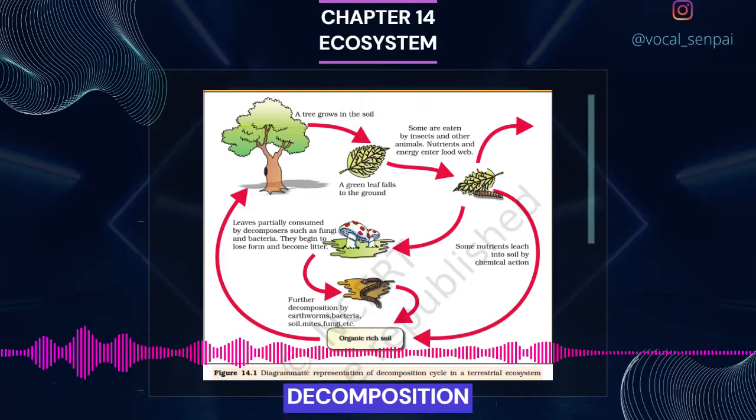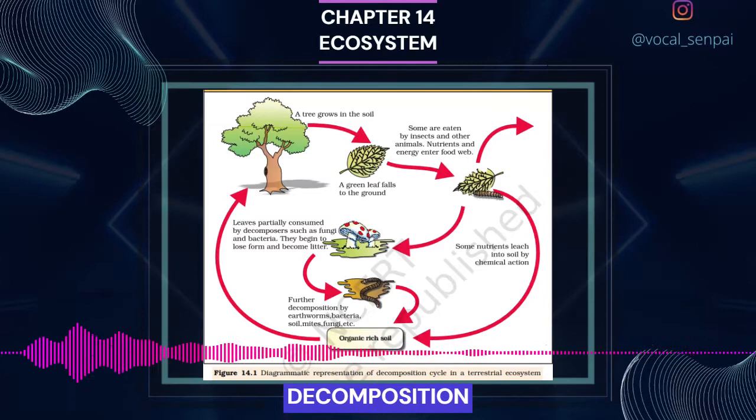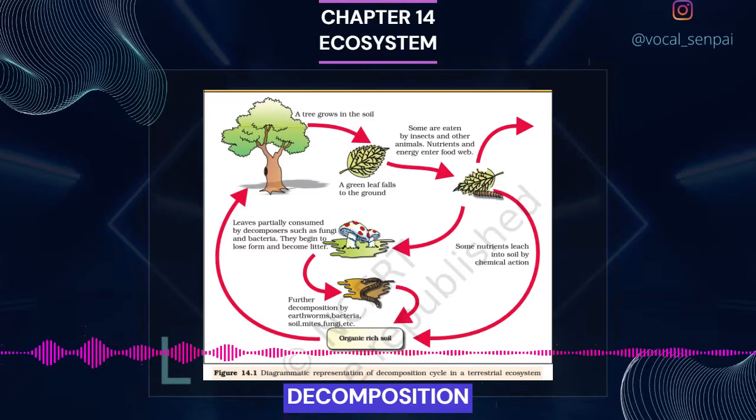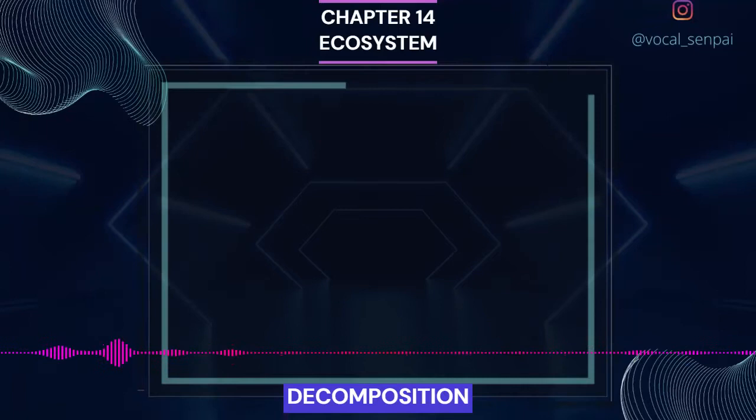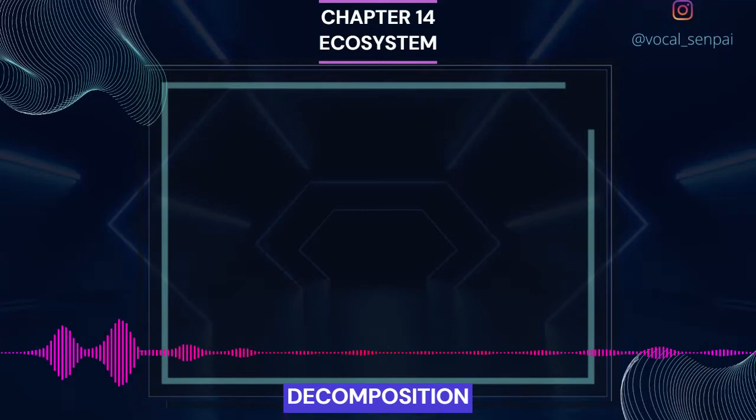Temperature and soil moisture are the most important climatic factors that regulate decomposition through their effects on the activities of soil microbes. Warm and moist environment favour decomposition whereas low temperature and anaerobiosis inhibit decomposition, resulting in buildup of organic materials.